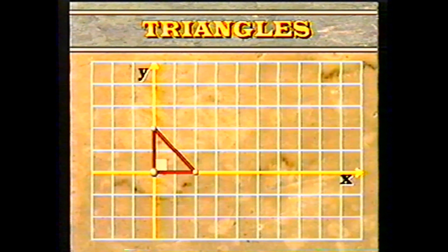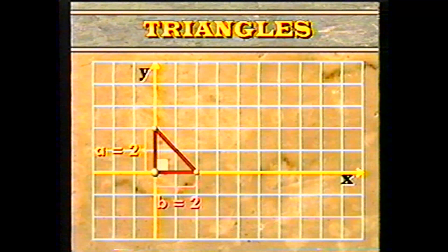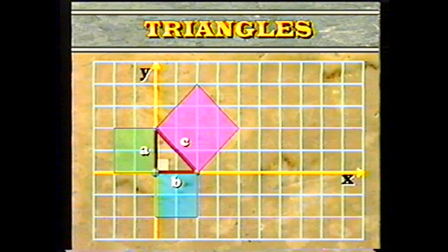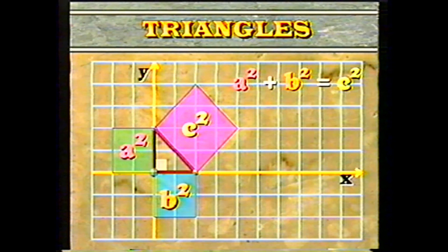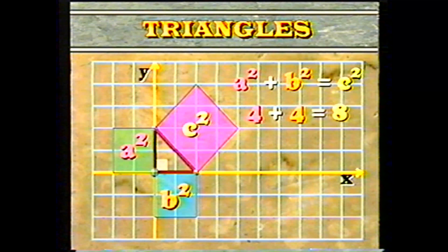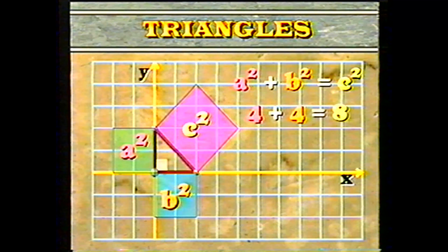To help justify this theorem, consider this example. We've placed a right triangle on the coordinate plane, and the lengths of each of the two legs are equal to 2. Let's place squares upon each of the three sides of this triangle. The areas of the squares on the legs are each equal to 2 times 2 for a total of 4. You can verify that by counting the boxes in the squares. The area of the square on the hypotenuse is 8.